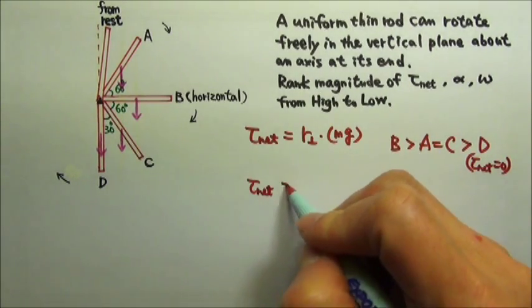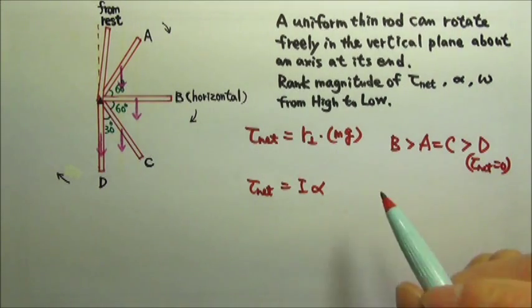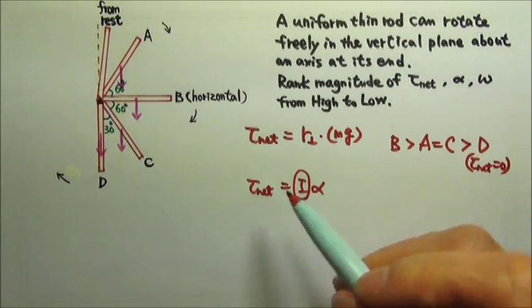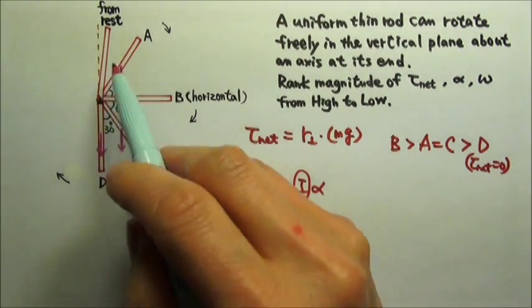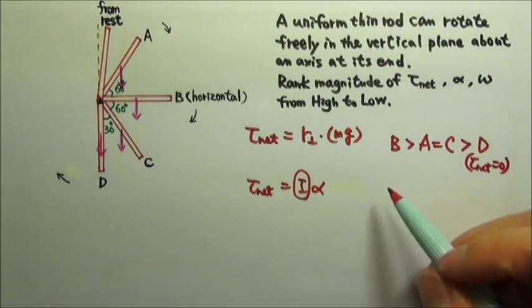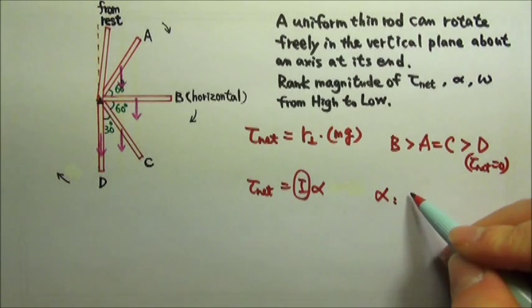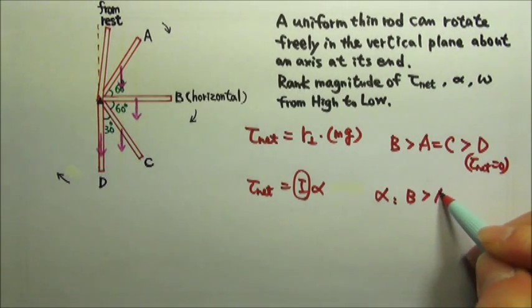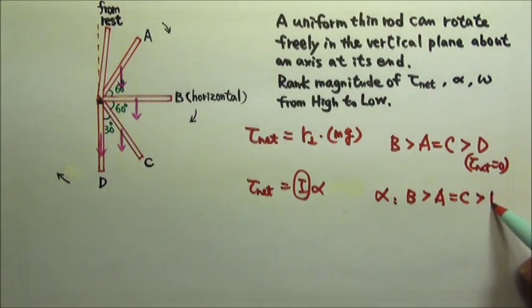And then we need alpha. Since the net torque equals I alpha, and the rotational inertia of the rod doesn't change for all these four different positions, to compare alpha we just have to compare the net torque. So the ranking would be exactly the same. For alpha, it is also B is bigger than A equals C, and then bigger than D.